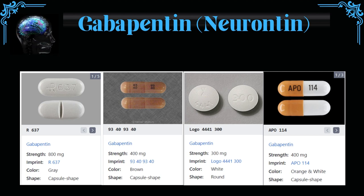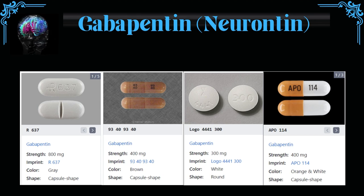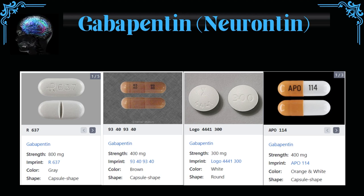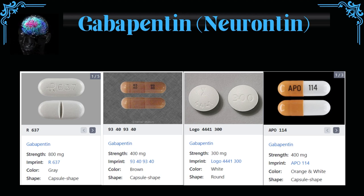The starting dose of gabapentin for the treatment of mood disorders and neuropathic pain is typically 300 mg a day, and the dose may be gradually increased based on the patient's response to treatment and tolerability.